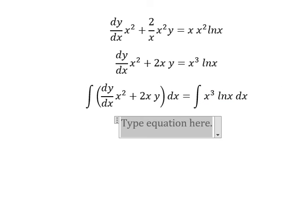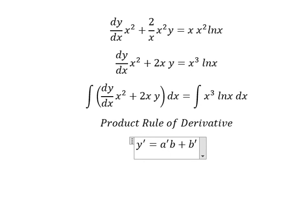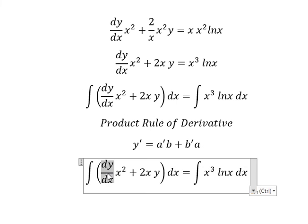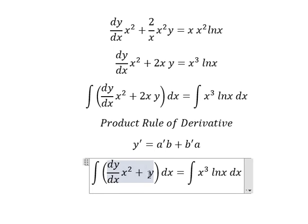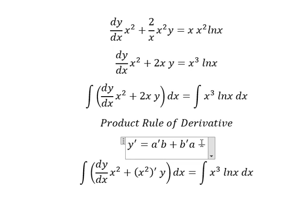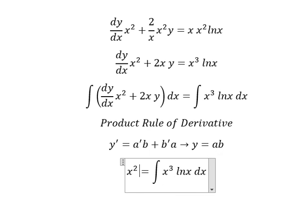Next we can use the product rule for the derivative. We have the first derivative of y equals the derivative of a multiplied by b, plus the derivative of b multiplied by a. So the integral of the left side gives us x squared times y.